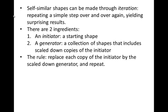To make self-similar shapes we need two ingredients: an initiator, which is some kind of starting shape, and then a generator, which is a collection of shapes that includes two or more scaled down copies of the initiator. And then you have a rule: replace each copy of the initiator by the scaled down generator and repeat.